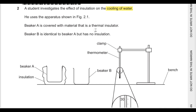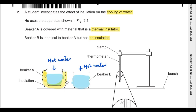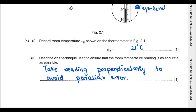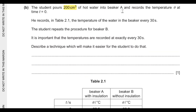Question two: a student investigates the effect of insulation on cooling of water. Beaker A is covered with a thermal insulator and beaker B is identical but has no insulation. Hot water is poured into both and allowed to cool, measured by a thermometer. The room temperature shown on the thermometer is 1 degree above 20, so it is 21 degrees Celsius. To ensure an accurate room temperature reading, your eye should be at the level of the reading to avoid parallax error.